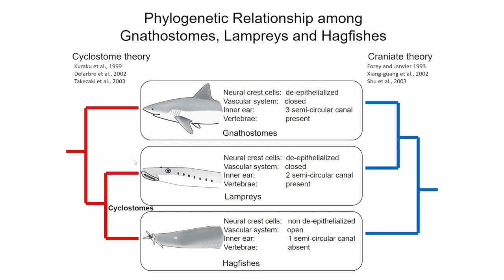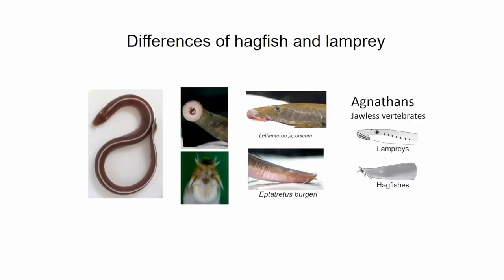The molecular phylogenetic tree is correct — or rather, how can living things change their own form by modifying their developmental system, or what happened during longer-term evolution? This is what I was originally interested in. I will now explain in more detail the differences between lamprey and hagfish.